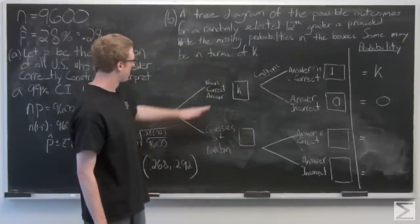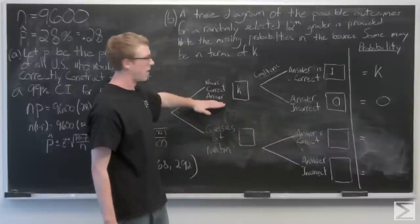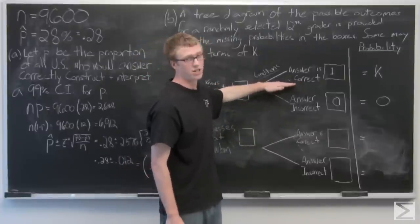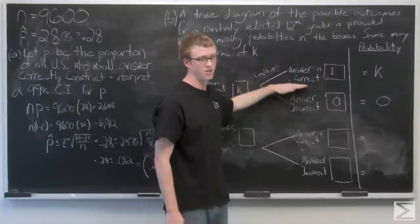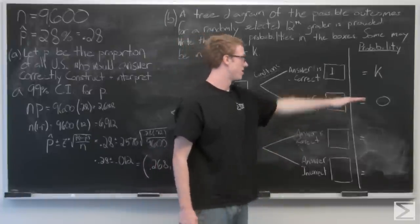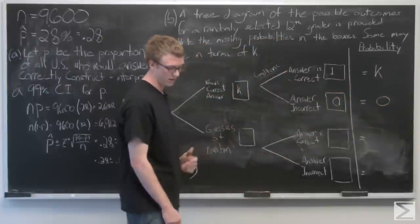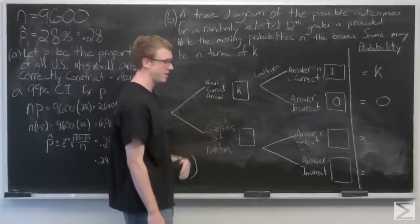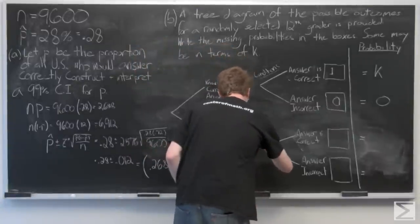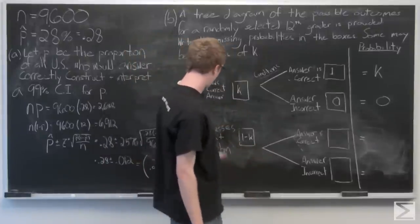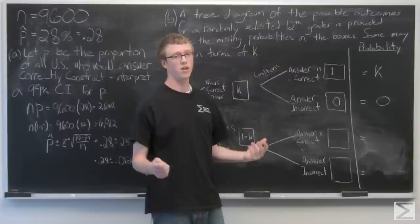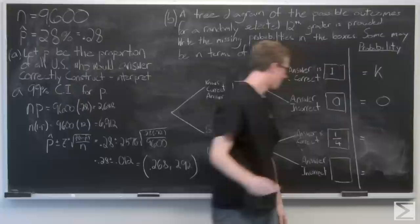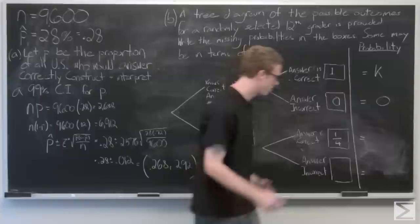The top half of the tree diagram shows: student who knows the correct answer, probability K. Given that, the probability the answer is correct is 1, and the probability the answer is incorrect is 0, giving a total probability of K. For the bottom half: student who doesn't know and guesses at random has probability 1 minus K, so these add up to 1. If guessing at random, the probability of answering correctly is 1 out of 4, and the probability of answering incorrectly is 3 out of 4.